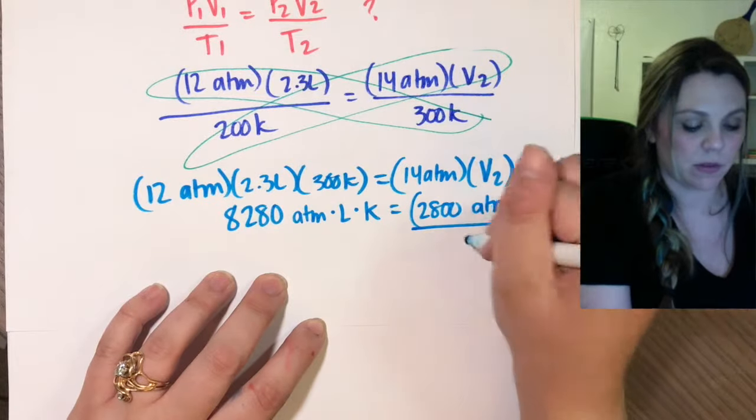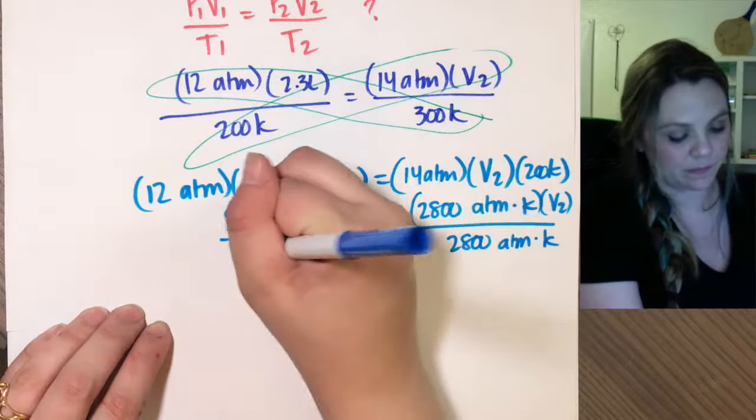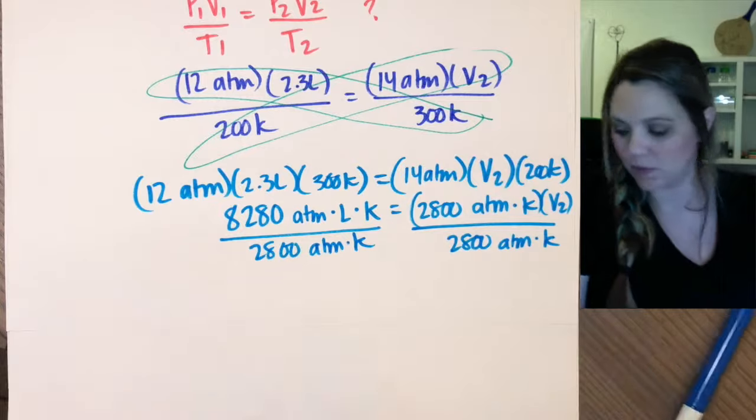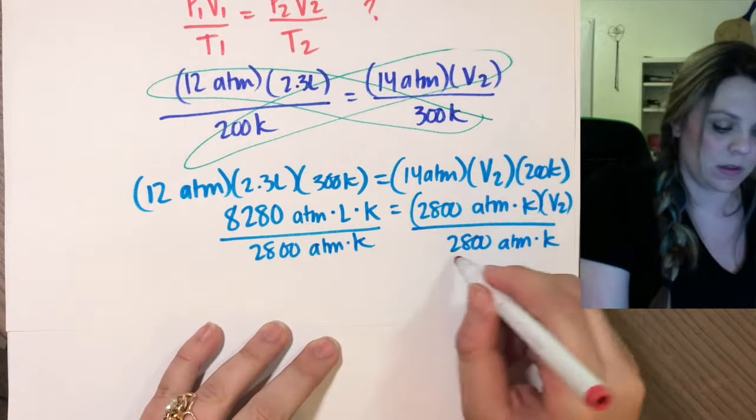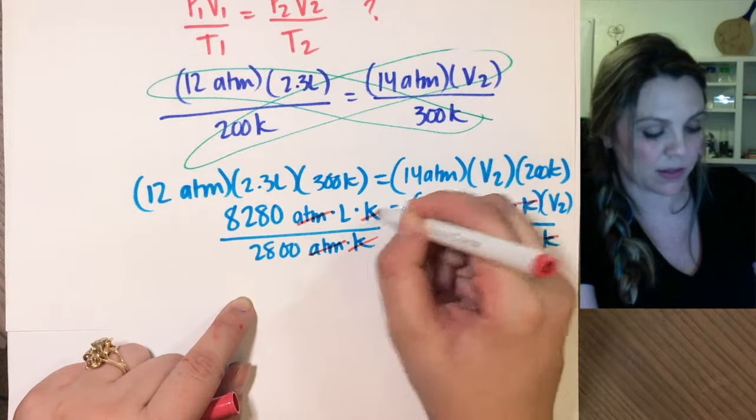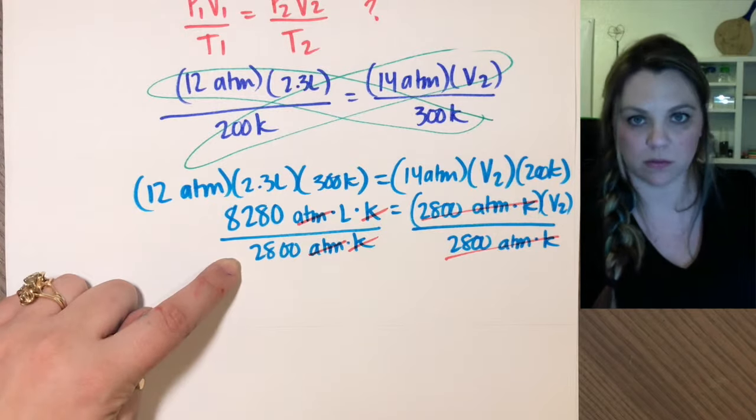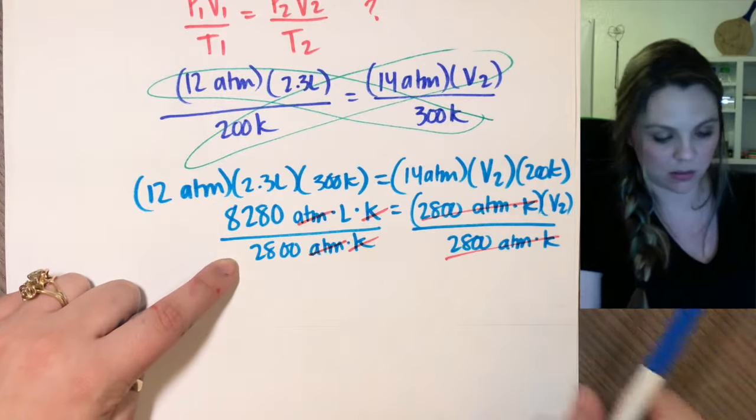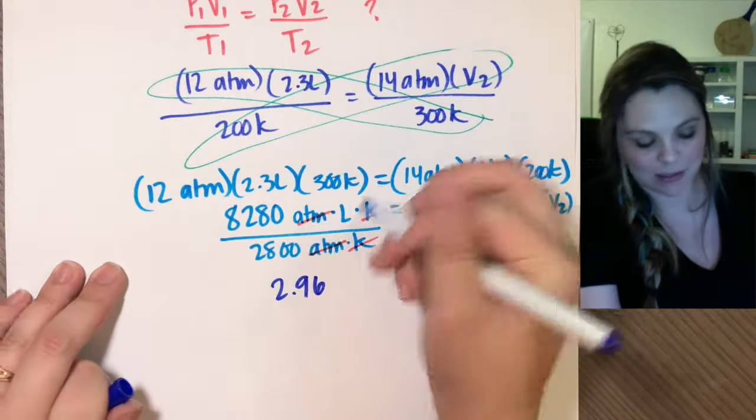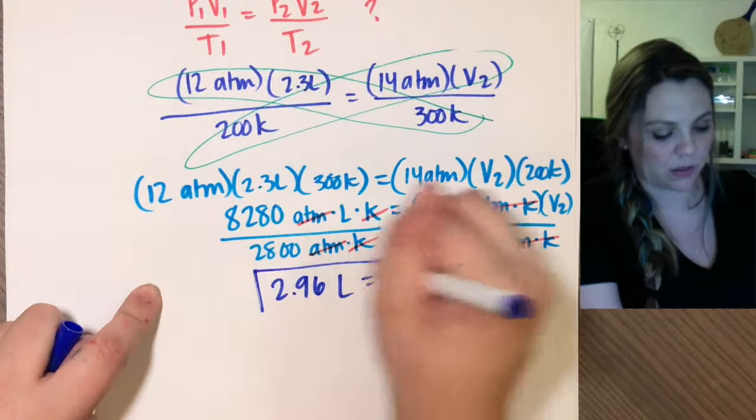So divide by 2,800 atm and Kelvin. That will cancel, and it'll cancel out atmospheres, it'll cancel out Kelvin. You just plug in some math into your calculator, you would get 2.96 liters is your volume two.